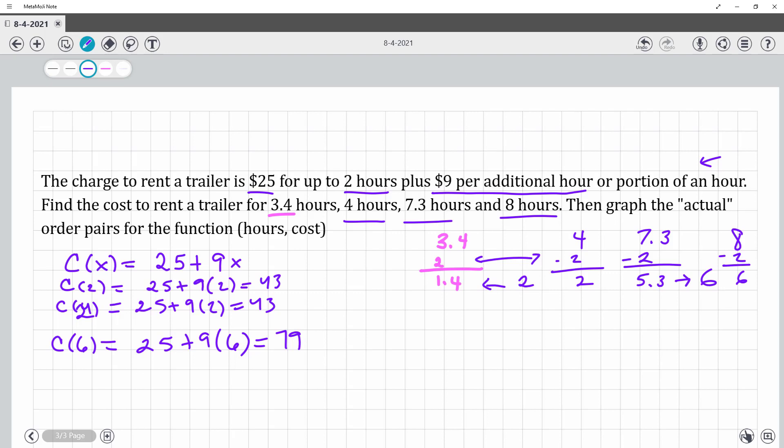And so I would also plug in, so it might be better to write these out. This was the 3.4, this was the 4, this is the 7.3, and as you're going to see the 8 is going to be the same.